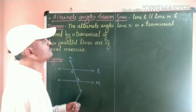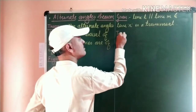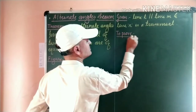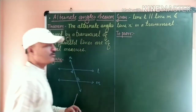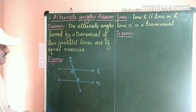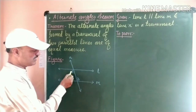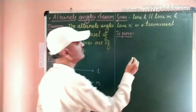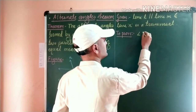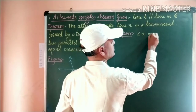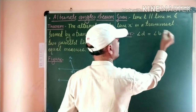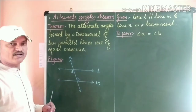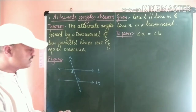Now, what is to prove? Because of these two parallel lines and the transversal, two alternate angles are formed. These two alternate angles are of equal measure. That is, angle D is equal to angle B. Angle D and angle B are alternate angles and they are of equal measure.